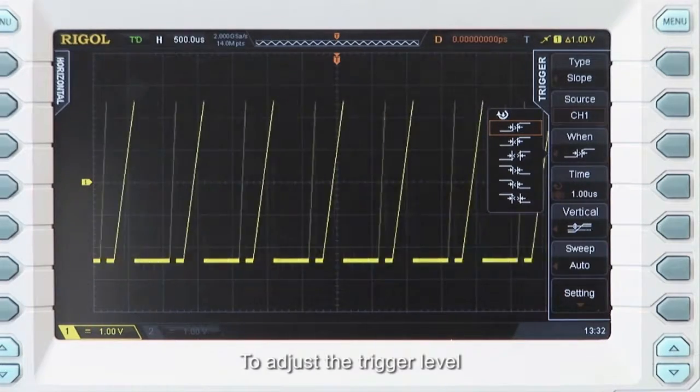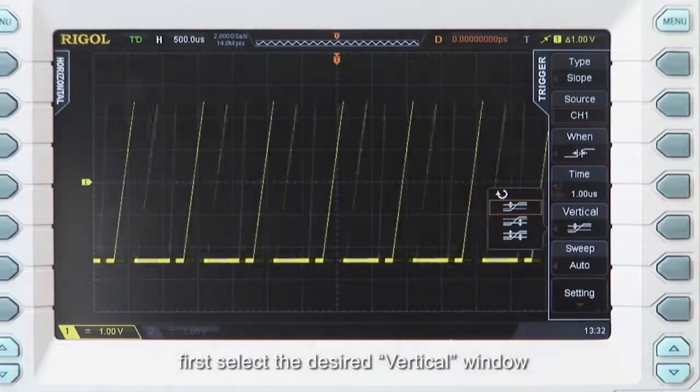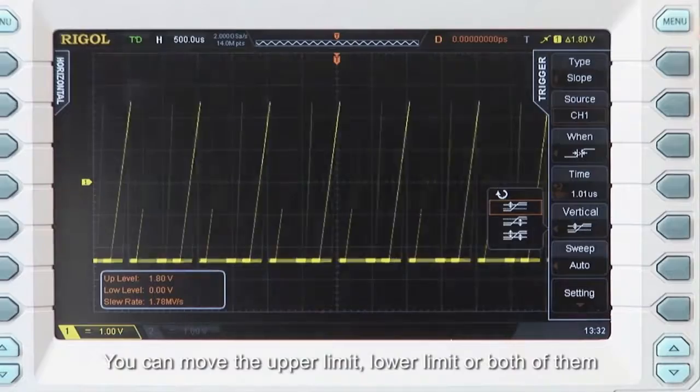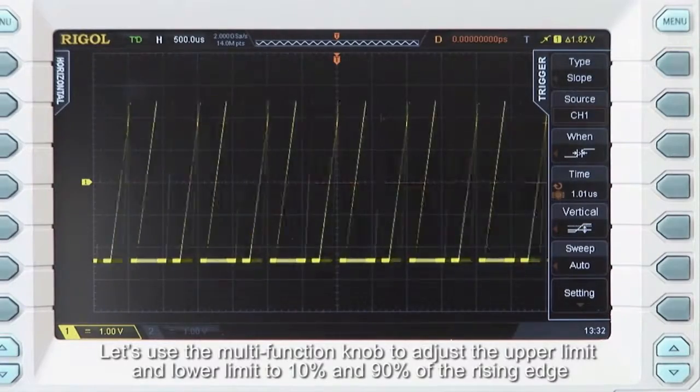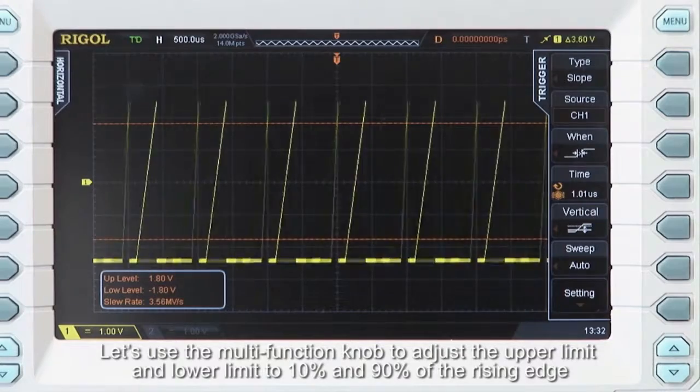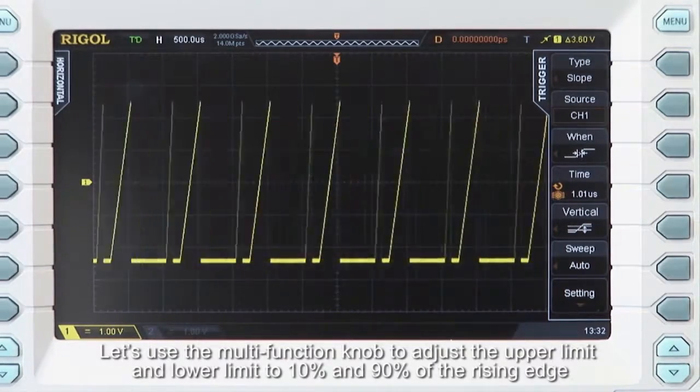To adjust the trigger level, first select the desired vertical window. Then you can move the upper or lower limits, or both of them. Now let's use the multifunction knob to adjust the upper limit and lower limit to 10% and 90% of the rising edge.